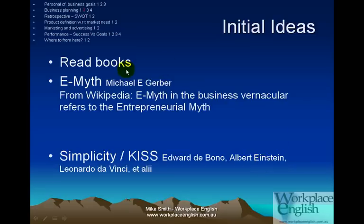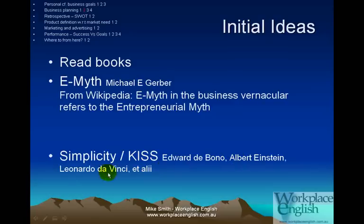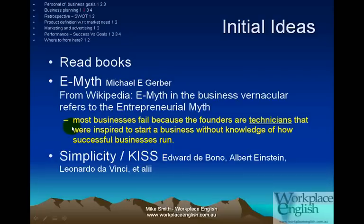What I did was I read books, because books are cheap and they're available. I also used the internet. Two books that I looked at were The E-Myth by Michael Gerber — the E-Myth in business jargon refers to the entrepreneurial myth — and I also looked at simplicity, the idea of simplicity and the KISS principle. The E-Myth talks about how most businesses fail because the founders are technicians. In other words, they know what they're doing — they might be a good baker, a good butcher, a good mechanic, a good plumber, or in my case a good dance teacher — and so they were inspired to start a business. But they did not know how successful businesses run, so they're missing some key information about actually running a business.